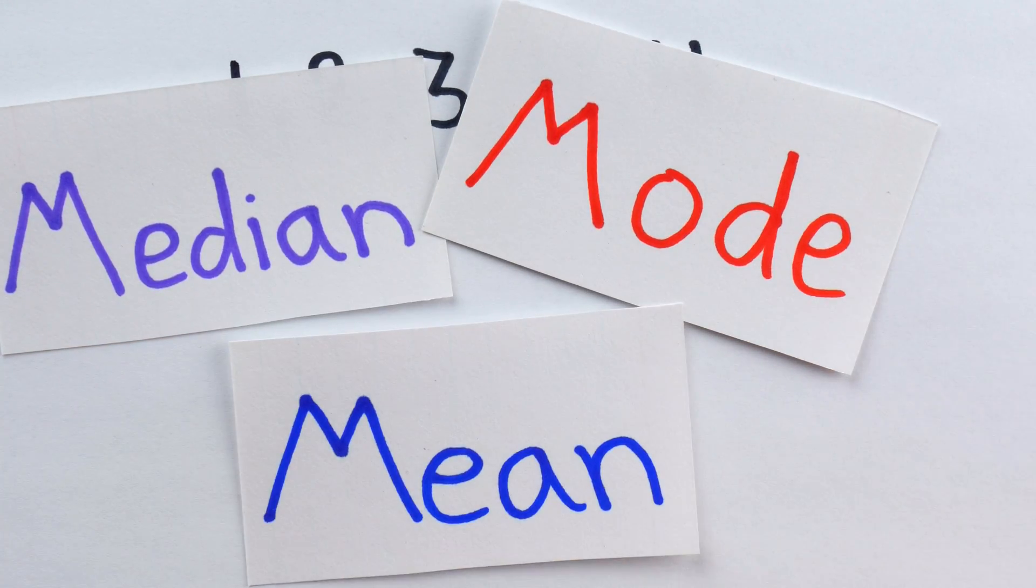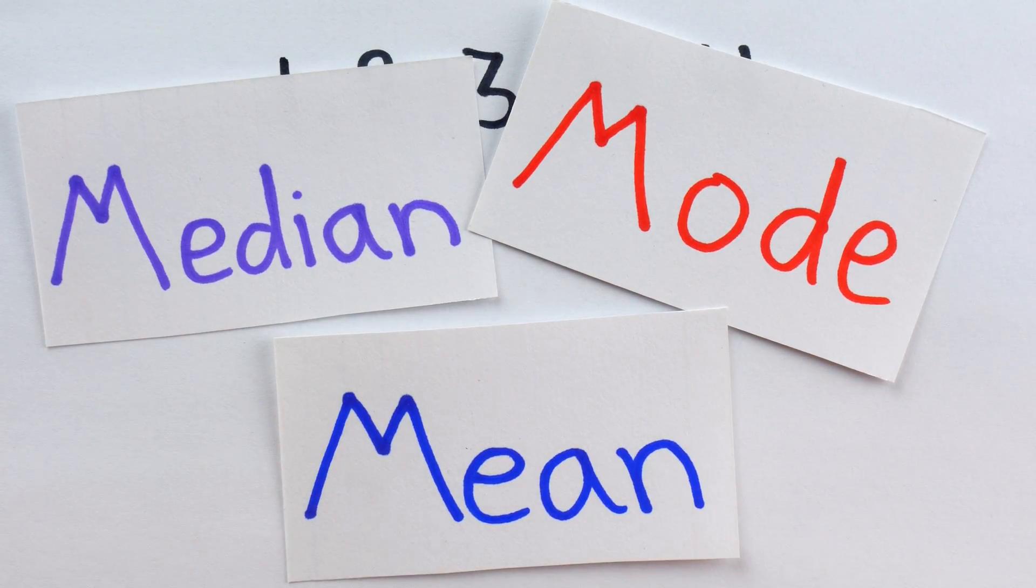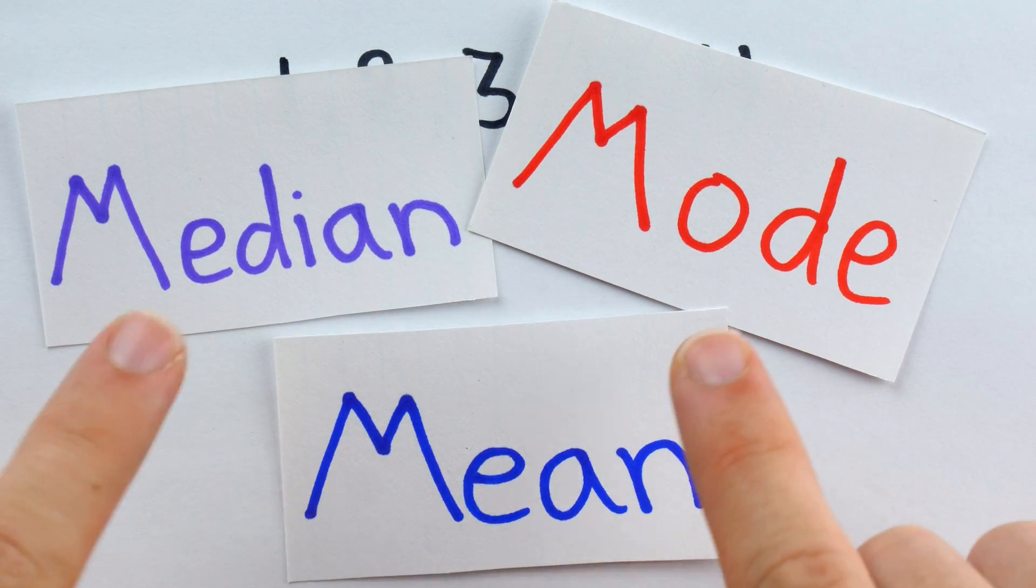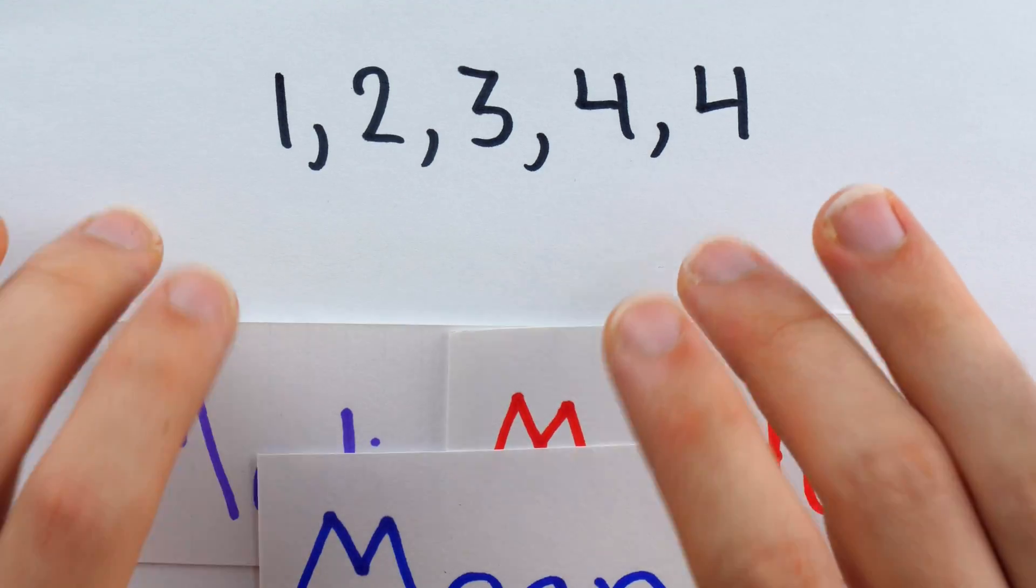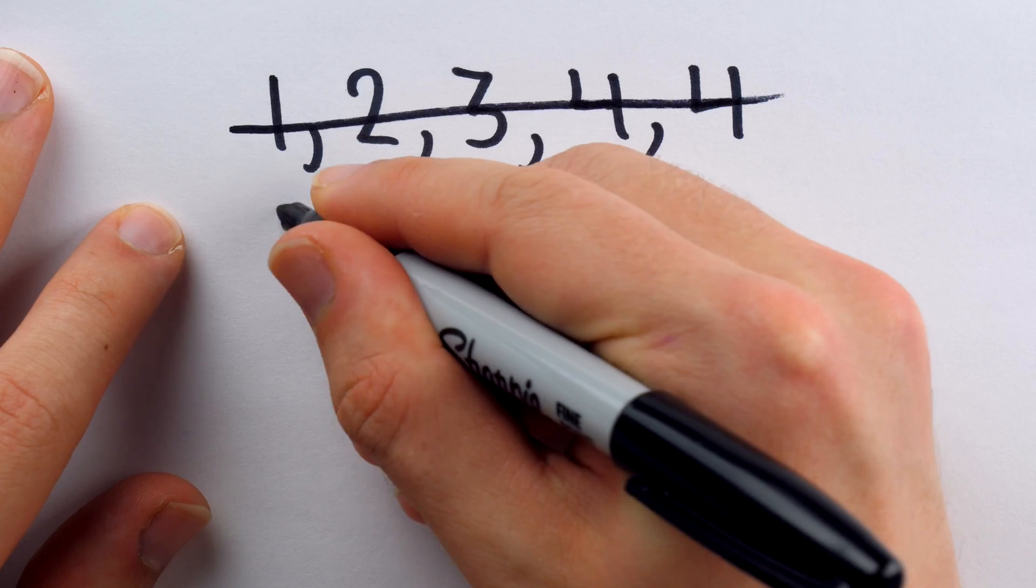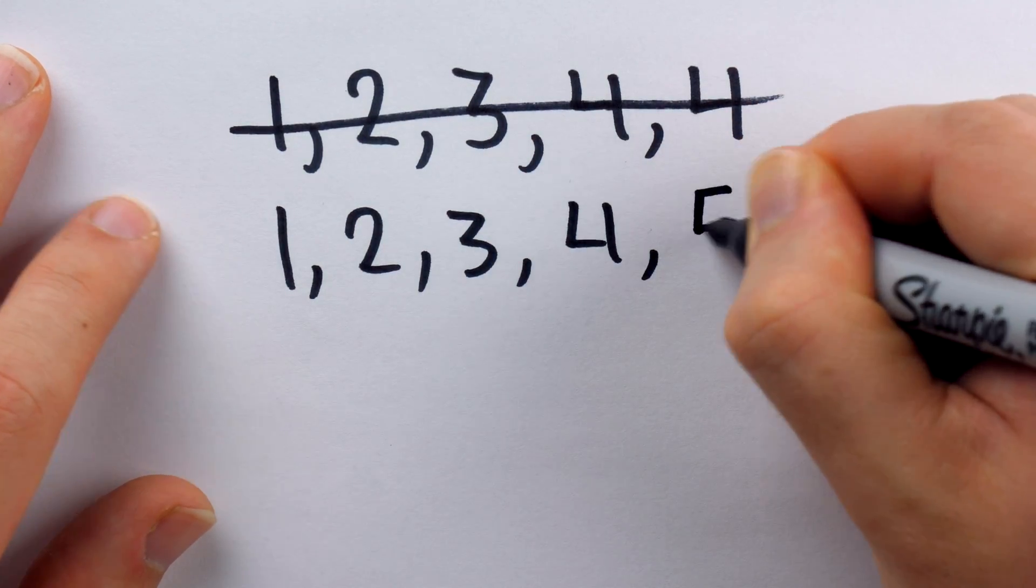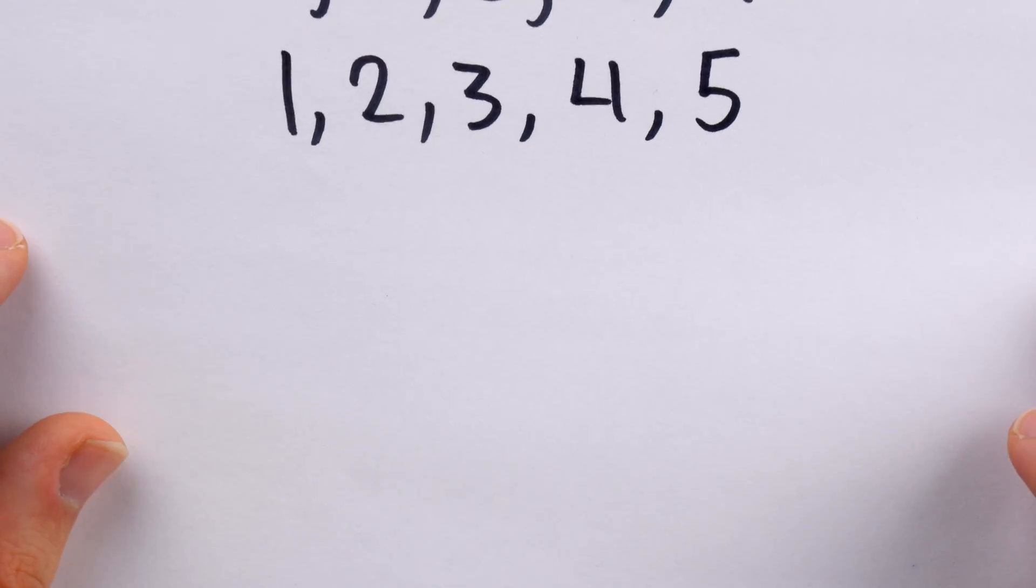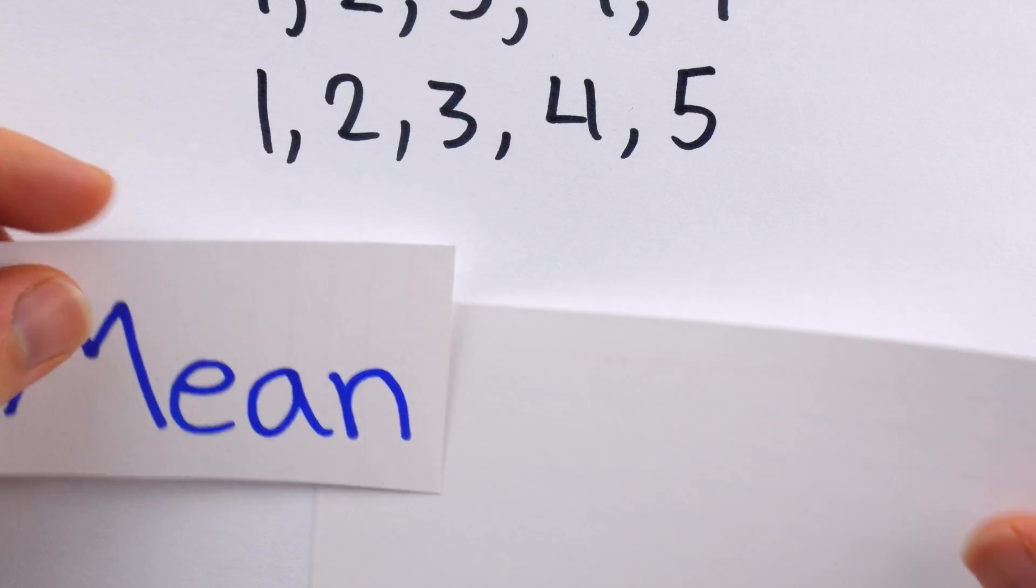Alright, can you tell which measure of center has the most aura yet? I think to really answer this important question, we should first look at some similar data sets, but with some small changes. Let's say we change this last data point of 4 to a 5. So now our new data set looks like this: 1, 2, 3, 4, 5. Now, what are the mean, median, and mode of this new set?